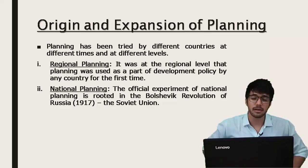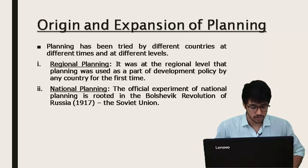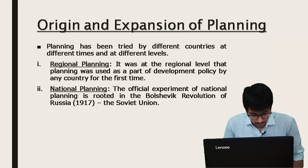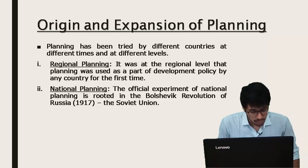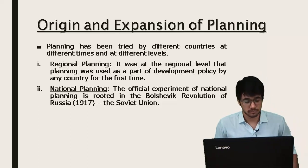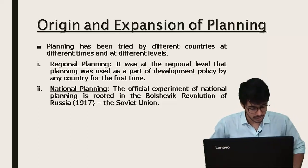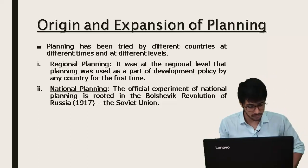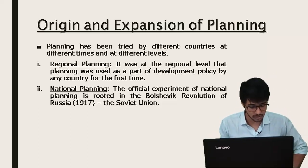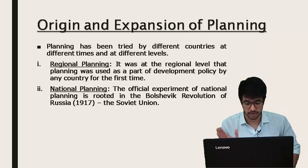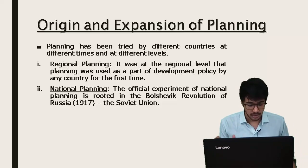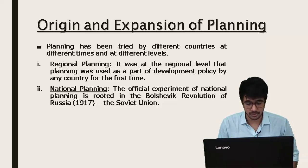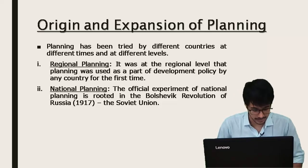The primary aims of this regional planning were flood control, soil conservation, and providing electricity. Additional goals included industrial development, forestry, wildlife conservation, town planning, construction of roads and rail, encouraging sound agricultural practices, and malaria control.